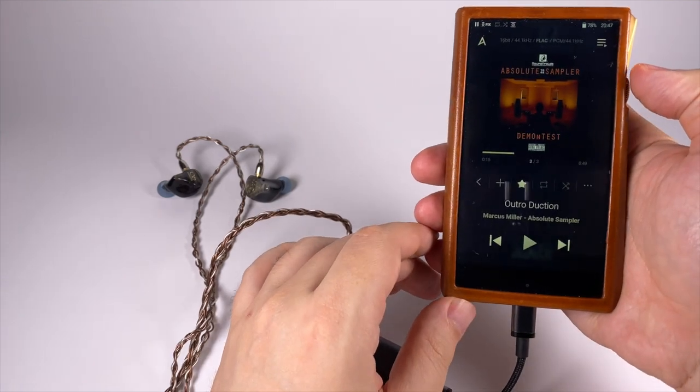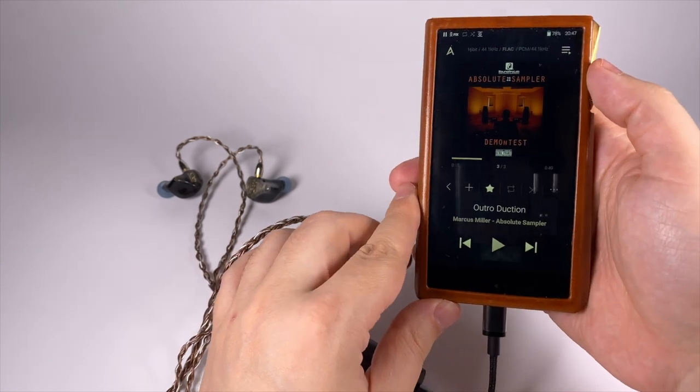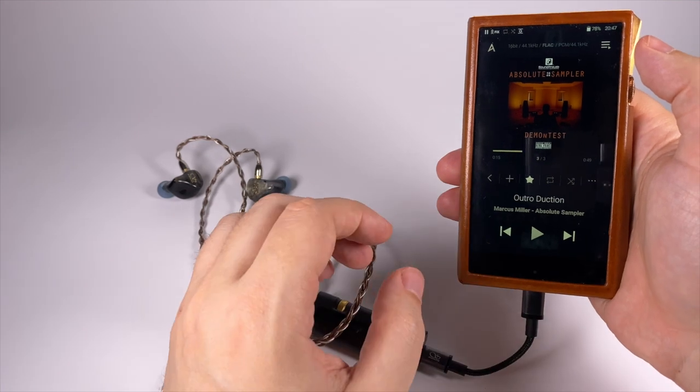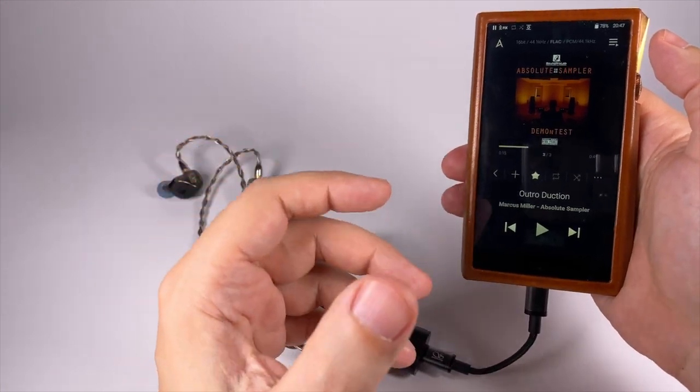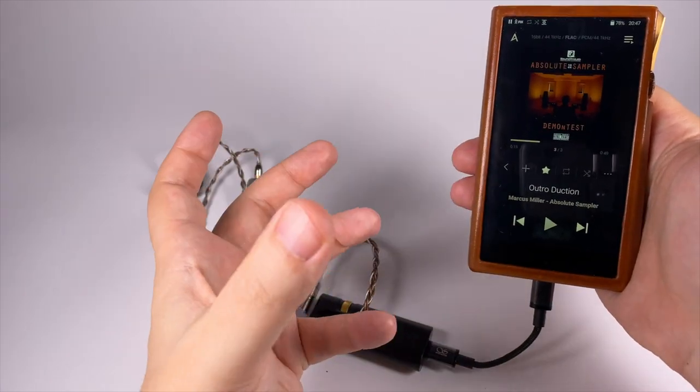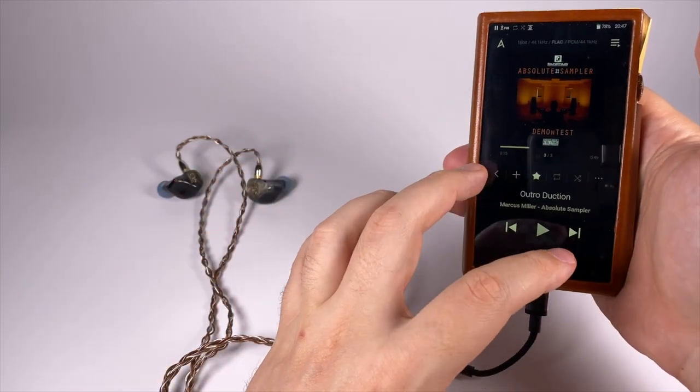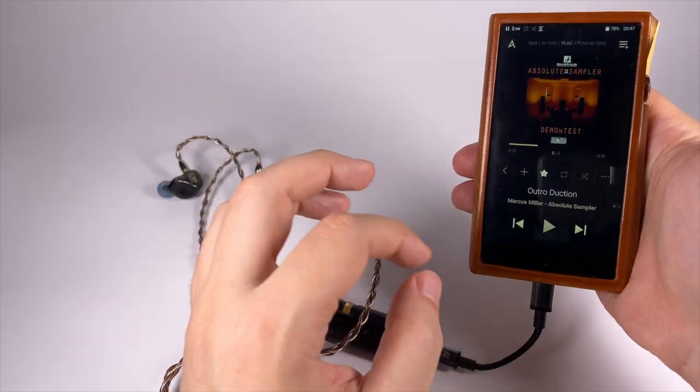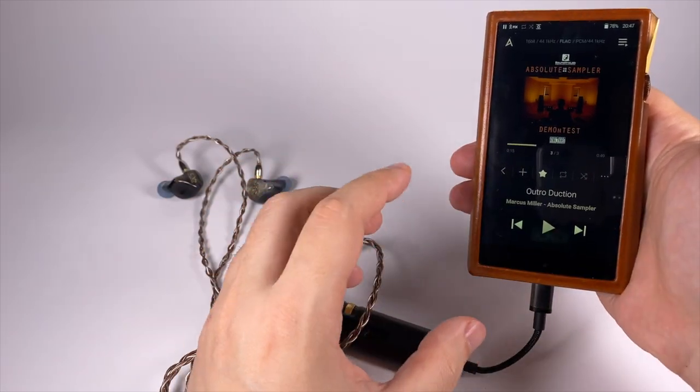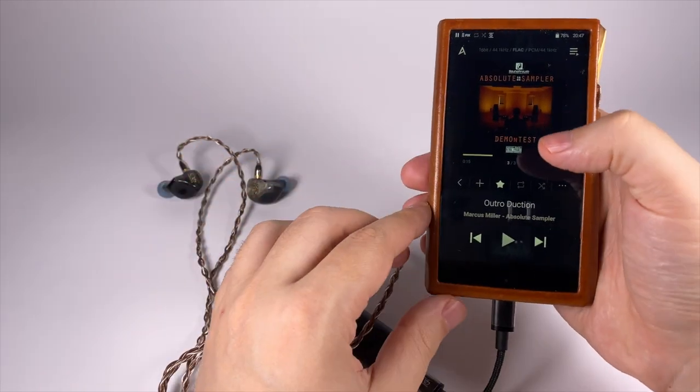As an example, I've got Marcus Miller 'Outro Duction' from the Sound Pro Lab Absolute Sampler. It's a bit cheaty test CD because they have boosted saturation, boosted presence, and this track is really filled with juicy low frequencies that sound hyper-pleasant. So it's not that typical audiophile compilation for those who like absolutely natural, uncolored records—it's made for fun. And with this digital-to-analog converter, it delivered them with maximum fun factor.